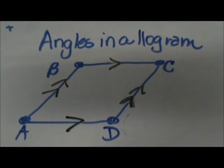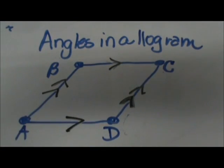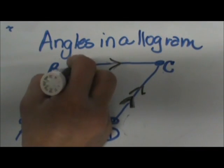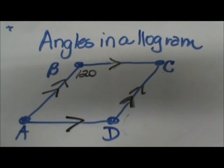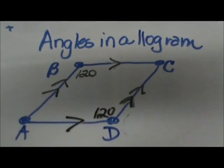One property of a parallelogram is that the opposite angles are congruent to each other. Angle B will be the same measure as angle D. Let's give it a measure. Let's say that angle B is 120 degrees. That means that angle D would also be 120 degrees.